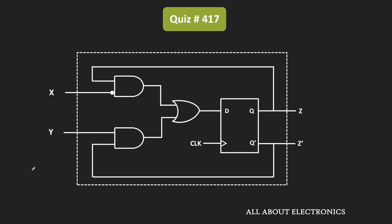If you observe this circuit, the additional logic gates are used with the D flip-flop, where X, Y, and Z are the inputs to these logic gates. First, let us find the expression of D in terms of X, Y, and Z. Z is given as the input to the first AND gate, so the output of this first AND gate is equal to X' dot Z.